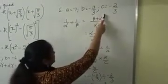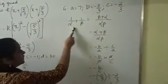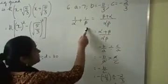That will be our first step to find the values of a, b and c. Next, we need to evaluate or we need to find the value of 1 by alpha plus 1 by beta.